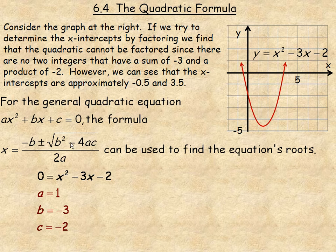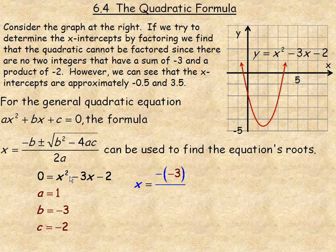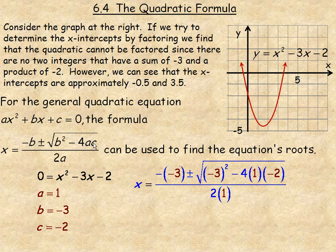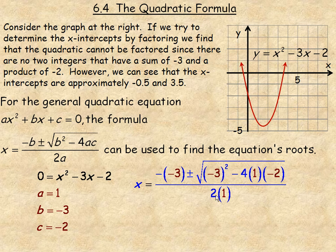You should always copy your formula down first. Filling in a, b, and c: at the beginning we have negative negative 3. Then plus or minus the square root of negative 3 squared, minus 4 times a — which is 1 — times c — which is negative 2. All over 2a, so 2 times 1.